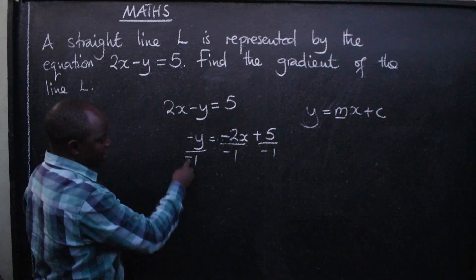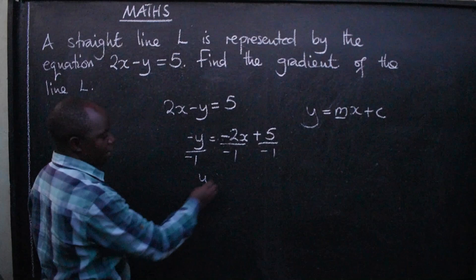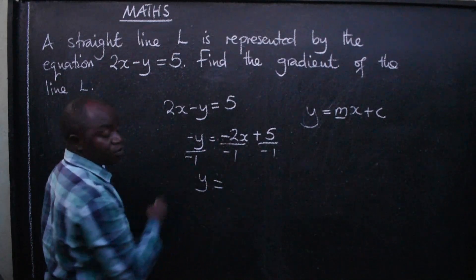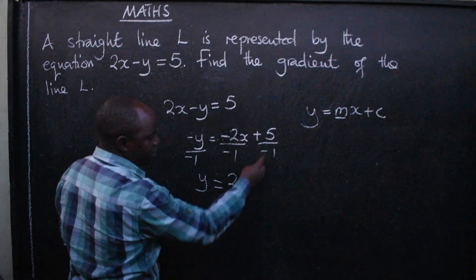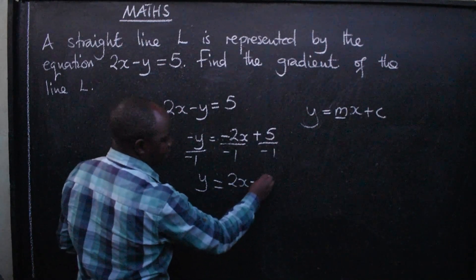So that this negative negative gives us positive. This negative negative will be positive, so we have 2x here. This positive and negative will be negative, then there's a 5.